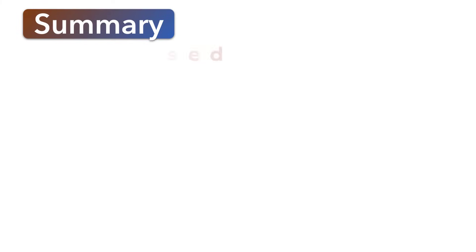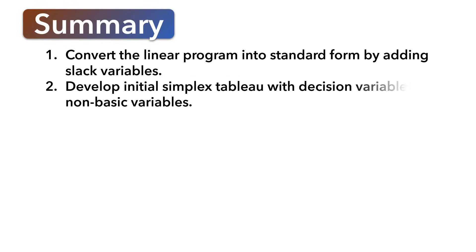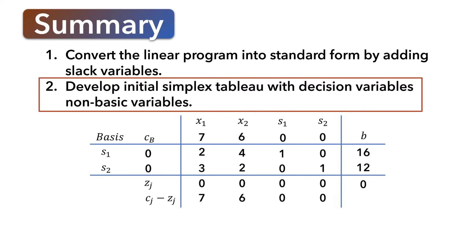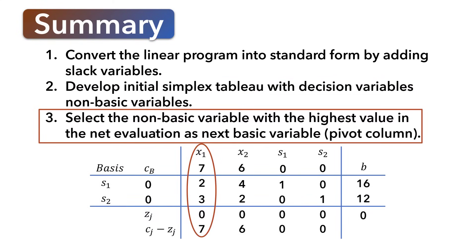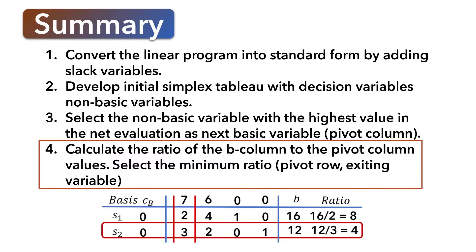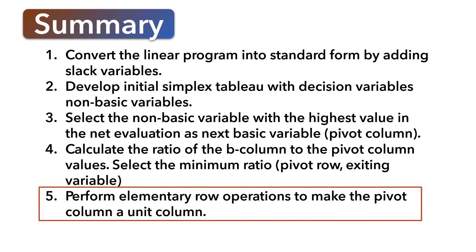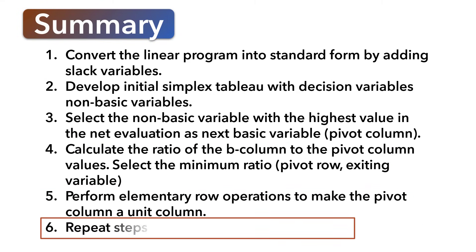In summary, here are the steps used in solving the maximization problem using the simplex tableau. We converted the linear program into standard form by adding slack variables. We developed the initial simplex tableau with x1 and x2 as non-basic variables. We selected the non-basic variable with the largest positive value in the net evaluation row to enter the basis — giving us the pivot column. We calculated the ratio of the B column to the pivot column values; the minimum non-negative ratio determined the pivot row, corresponding to the variable leaving the basis. We performed elementary row operations to make the new basic variable's column a unit column. We repeated these steps until the net evaluation row had no positive entry, indicating an optimal solution.